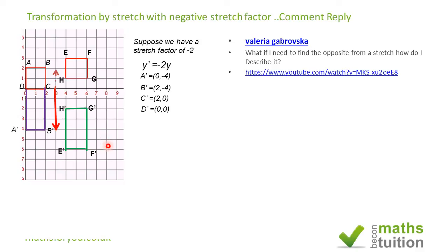The F coordinate is 3. So if you divide -6 by 3, you get -2, and that will give us the stretch factor that transformed object EFGH to object E prime, F prime, G prime, and H prime.